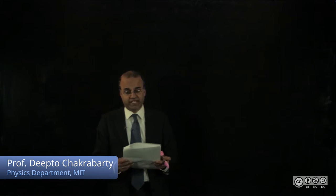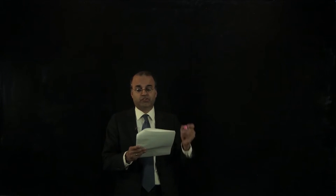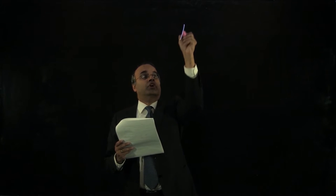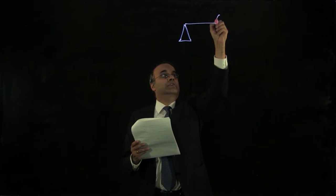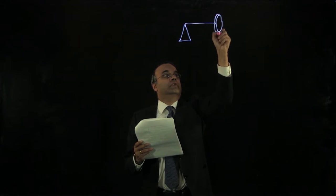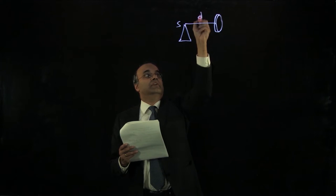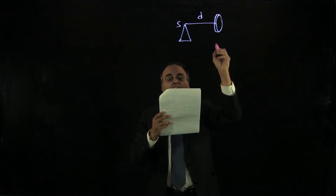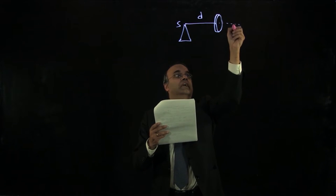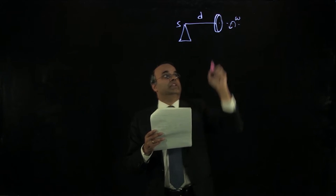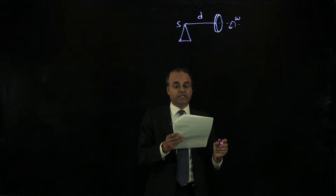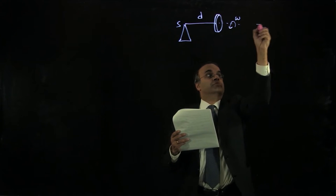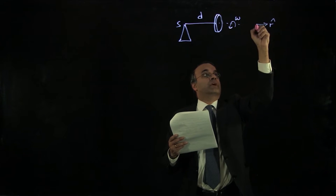Now that we've seen how to describe a rotating vector, we can use that to analyze the motion of our gyroscope. I'll draw a side view of my pivot and my rod. Here's the wheel. I'll call this point S. That's a distance d. And we'll assume that the angular velocity is in that direction, so that the spin angular velocity vector is pointing outwards in the plus r hat direction.